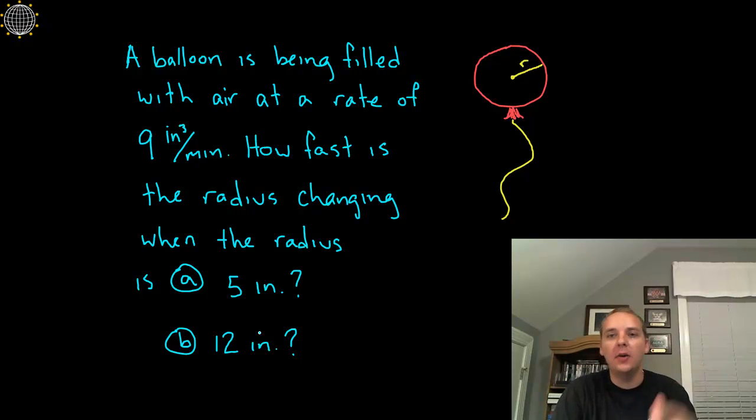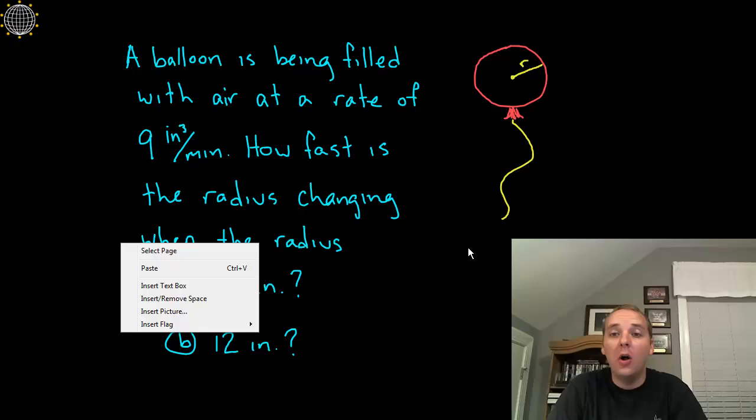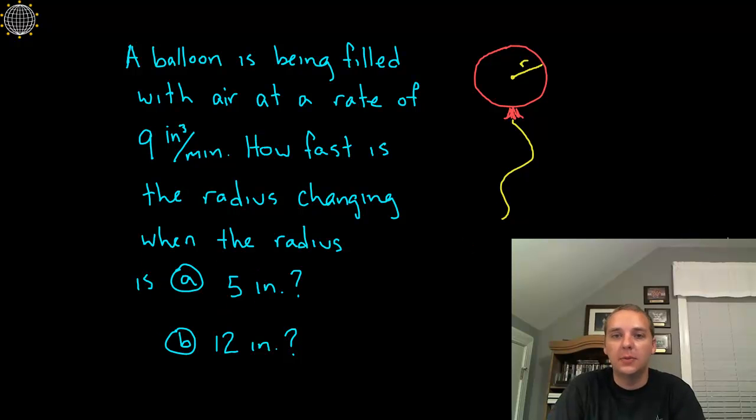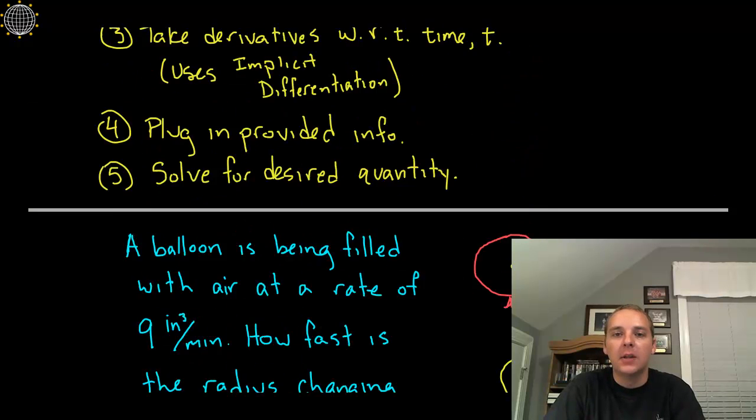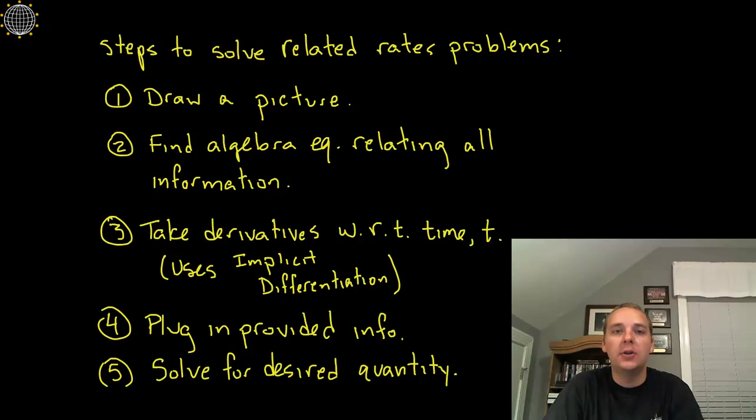Okay, so now let's zoom out, let's think how do we solve all related rates problems because that's what this is. Here's your steps to solve them. First of all you need a picture, so if you don't have one draw one so you can visualize what's going on. Step number 2, find some sort of equation that relates all of those variables.